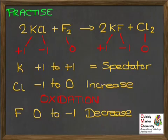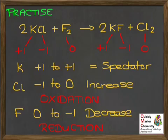The fluorine starts as 0, the element F2. On the right, it's potassium fluoride with a minus 1 oxidation state. 0 to minus 1 is a decrease, and so the fluorine has been reduced here.